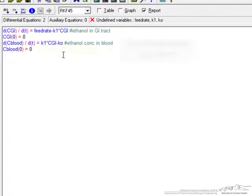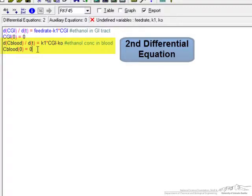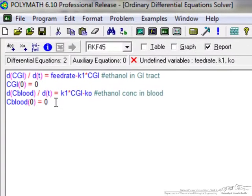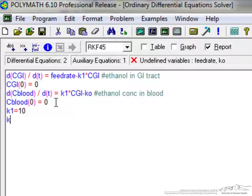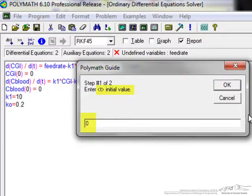We have the two reactions and initial conditions. We can now put in our rate constants: K1 equals 10, K0 equals 0.2. We want an initial value of time to be zero, and we'll do the integration for 12 hours.